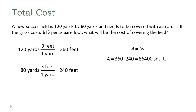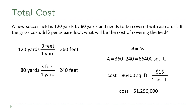That's not the answer though — the question asked for the cost. To get the cost, I'll use dimensional analysis again. I take that 86,400 square feet and multiply it by the unit cost of $15 per square foot. The square feet cancel, leaving only dollars, and that total cost comes out to $1,296,000.